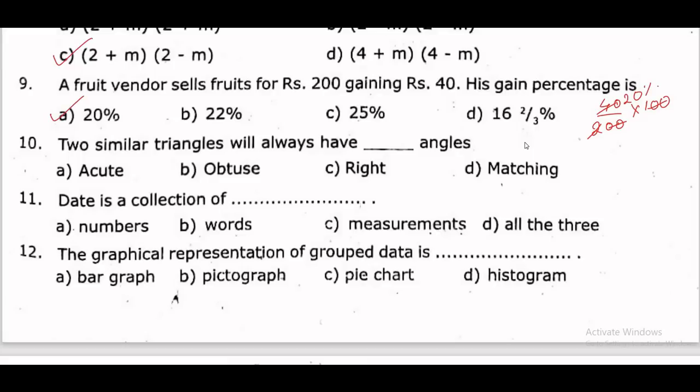Two similar triangles will always have dash angles. Two triangles that are similar — congruent means sides are equal length, similar means sides are in the same ratio. For similar triangles, the matching angles are always equal. So the answer is matching angles. Option D.